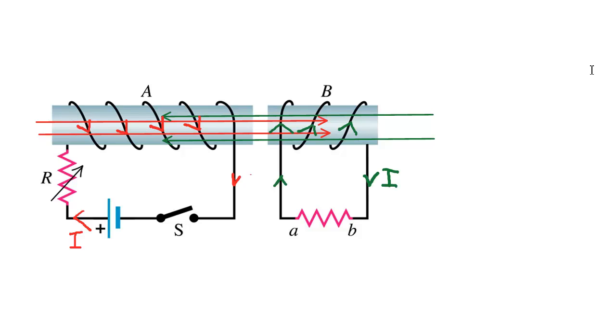It's important to note that after the switch has been closed for a long time, the current will diminish to zero in solenoid B because the flux will no longer be changing. So the current will vanish, the green lines will disappear, and all that will be left are the red lines passing through it, which represent the magnetic field from A.